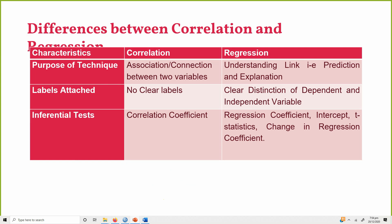The purpose of correlation is just establishing a relationship between two variables. However, in regression we are looking at prediction or explanation of the dependent variable based on a number of independent variables. In correlation there is no label attached — there is no independent or dependent variable.